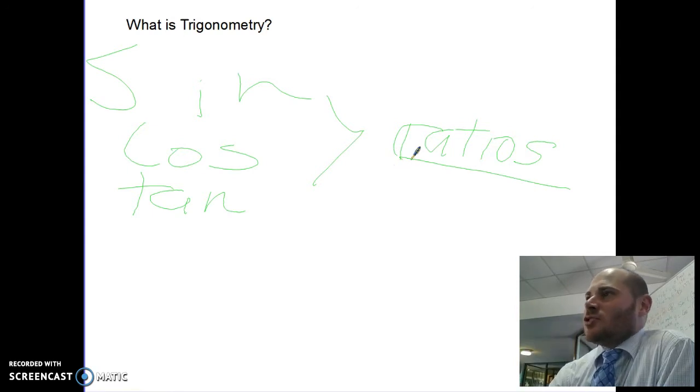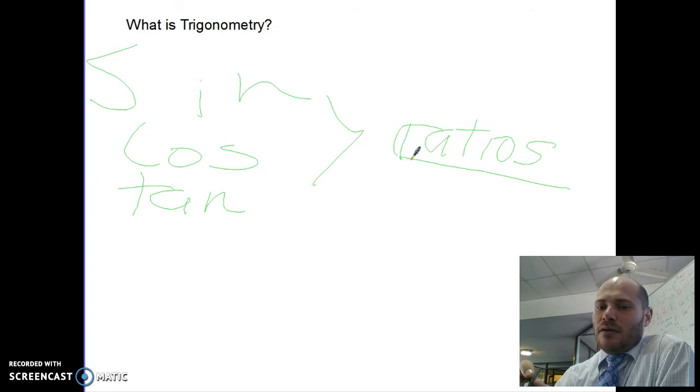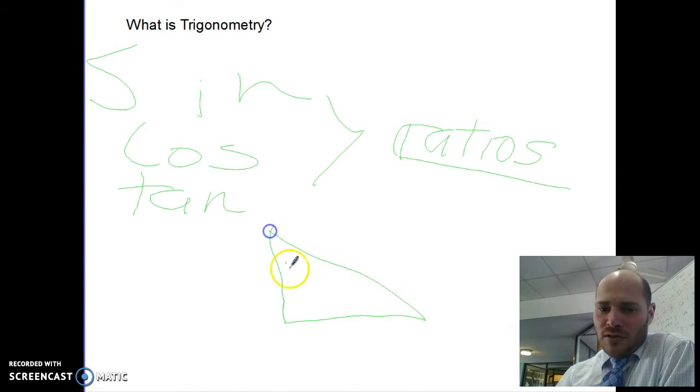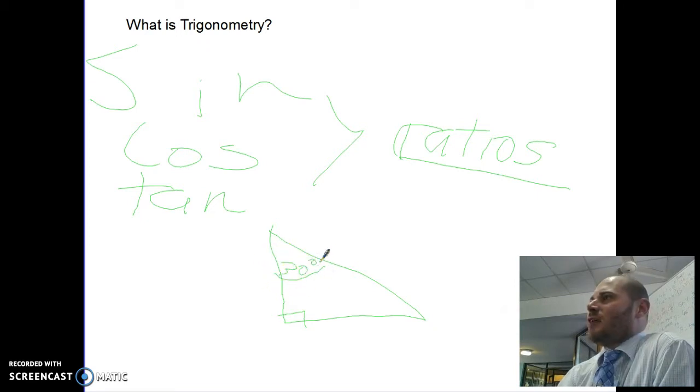So this sine ratio, the cosine ratio, the tangent ratio, are what happened way back when people were starting to draw triangles and measure the angles and measure the sides. And what they did, for instance, if they started with 30-degree triangles, they drew a whole heap of 30-degree triangles and then started measuring the sides.